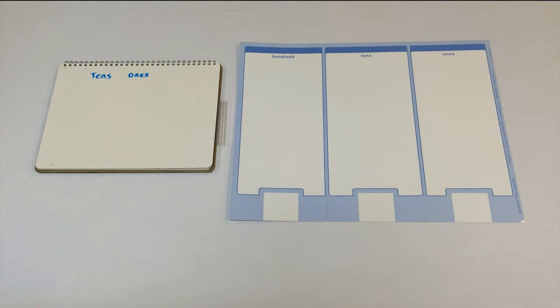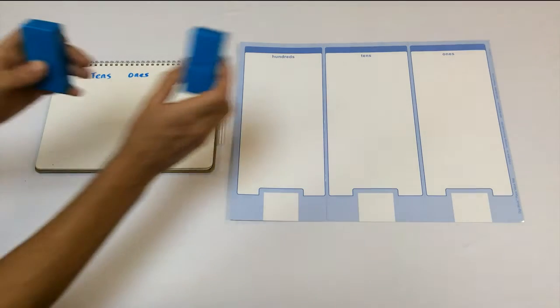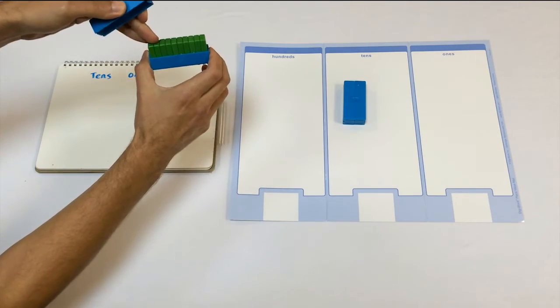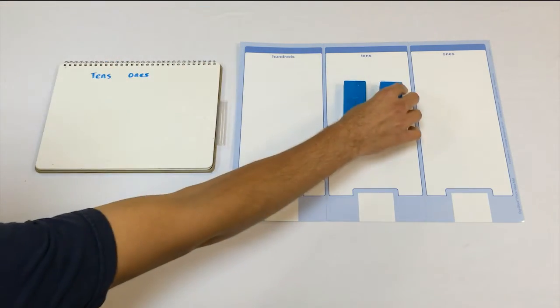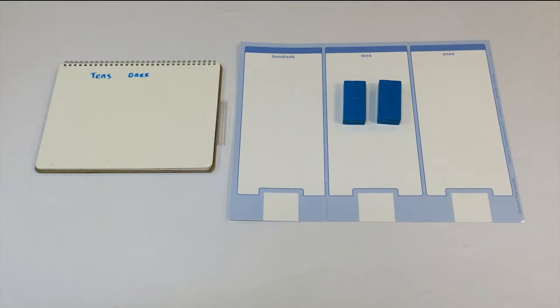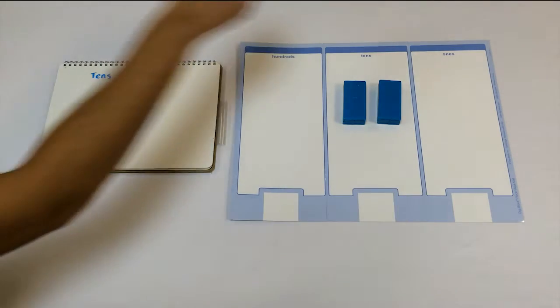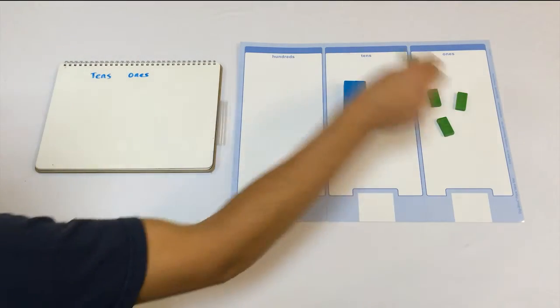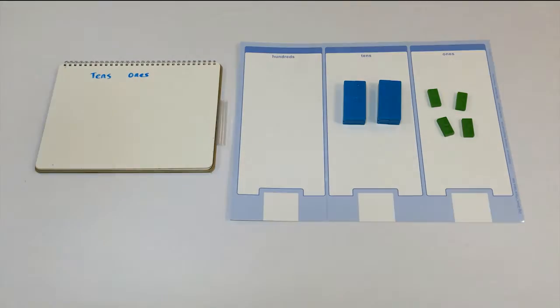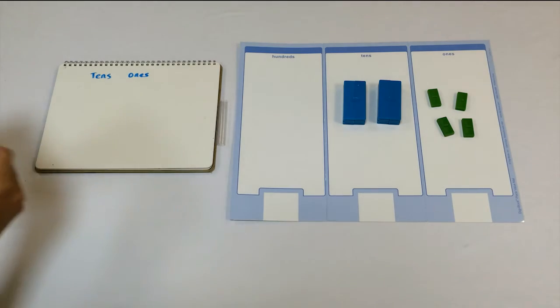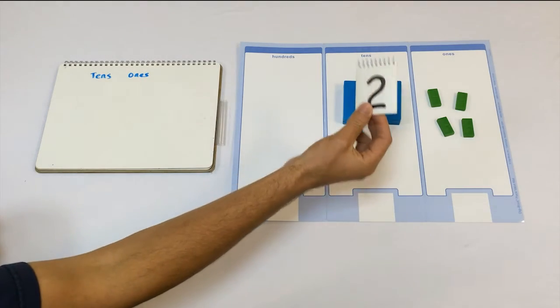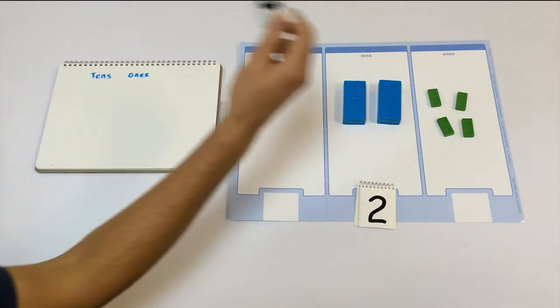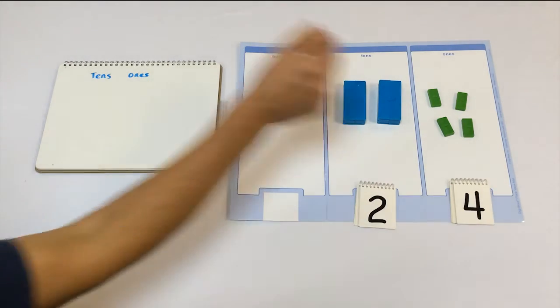So, to show you, I'll do 24 minus 8. So, to make 24, we need two 10s. These are 10s. They have 10 ones inside. And we need four 1s. Here are my four 1s. And I'll use digit flip cards to keep track of how many blocks are in the 10s place, and how many blocks are in the 1s place.